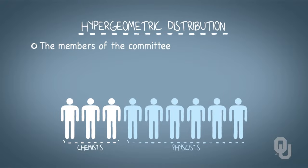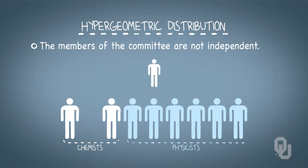We also know that the members of the committee are not independent. For example, if we add one chemist to the committee, we have one fewer chemist remaining to be chosen. Therefore the likelihood of choosing another chemist changes.